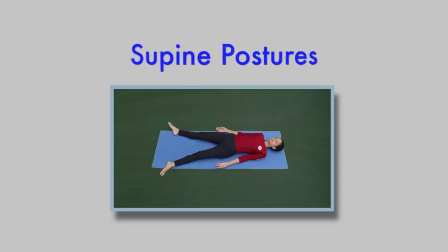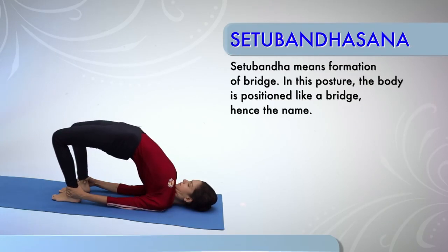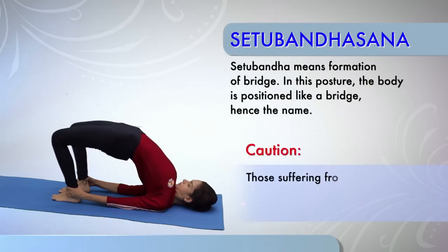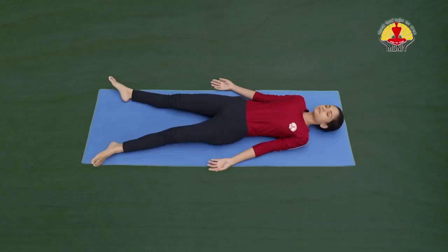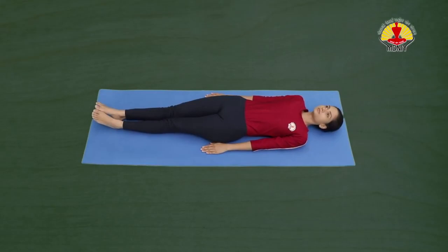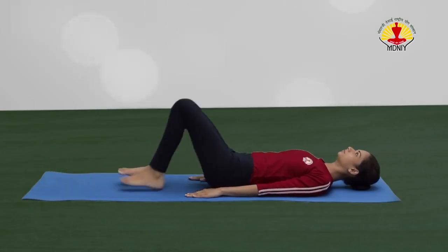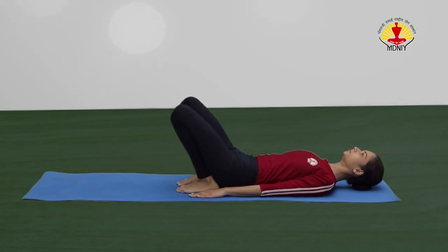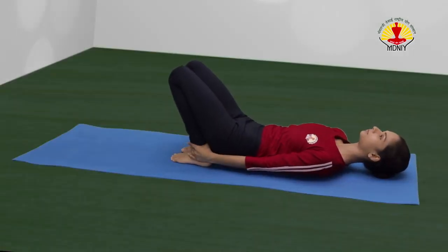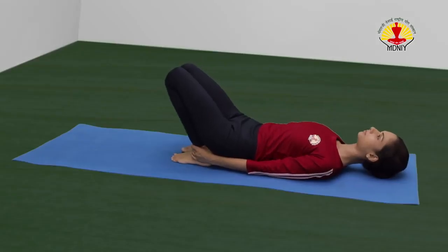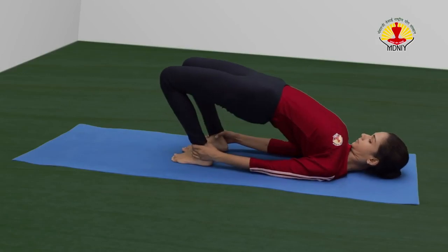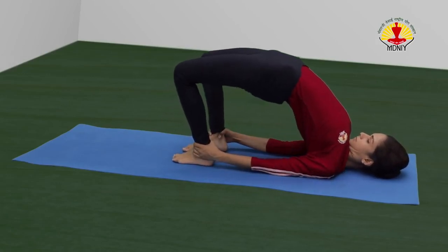Supine Postures. Setubandhasana or the Bridge Posture. Caution! Those suffering from stomach ulcers and hernia should not practice this asana. Start in a supine position by bending both the legs at the knees and bringing the heels near the buttocks. While holding both the ankles, as per your convenience, keep the knees and feet in one straight line. Inhale and slowly raise your buttocks and trunk up as much as you can to form a bridge.